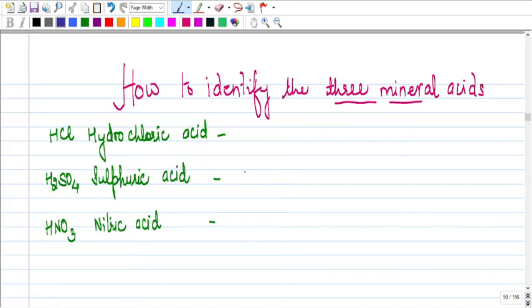Hello students, we are going to take up the topic today to identify the three mineral acids. So what is the question? The question is how will you identify the three mineral acids? And what are these three mineral acids? These three mineral acids are hydrochloric acid with formula HCl, sulfuric acid with formula H2SO4, and nitric acid having formula HNO3.